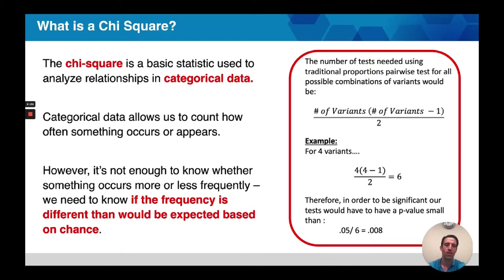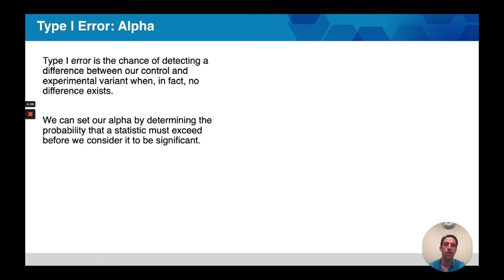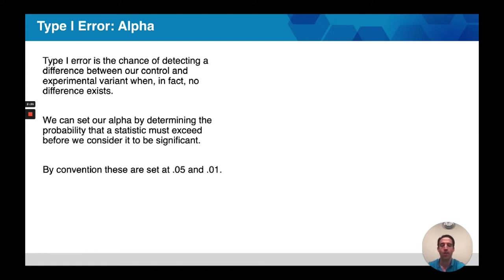Why do we do this? We need to consider what is type 1 error and alpha. Type 1 error is the chance of detecting a difference between our control and experimental variant when, in fact, no difference actually exists. We as the researchers are put in a position where we can determine our alpha — we set this ahead of time. By convention, we're often going to set this at 0.05 or 0.01. Sometimes people set it at 0.1 when they want a reduced confidence.